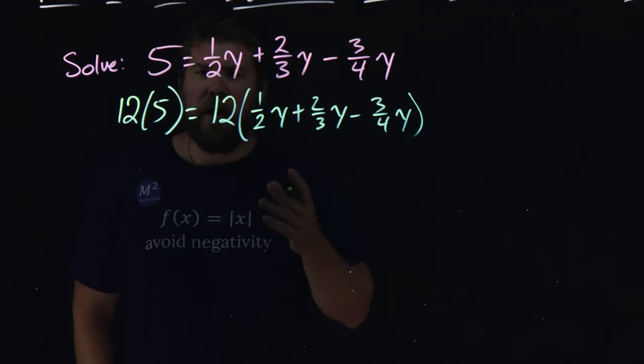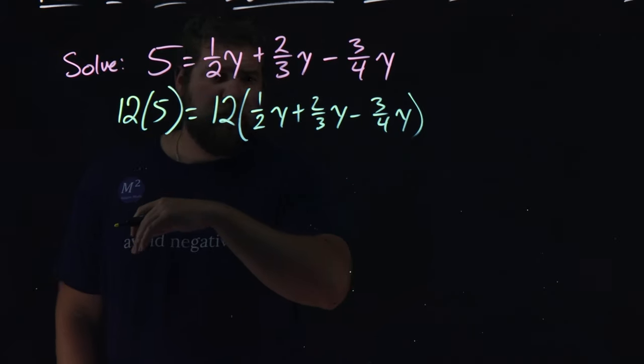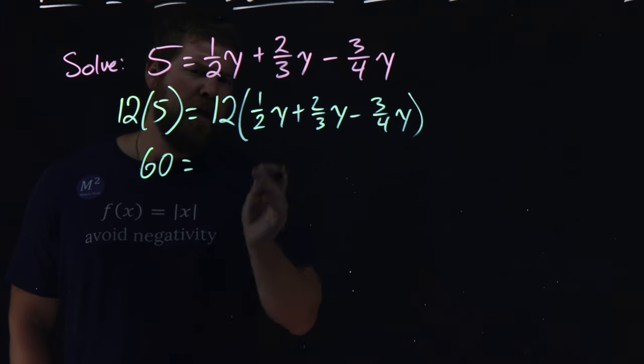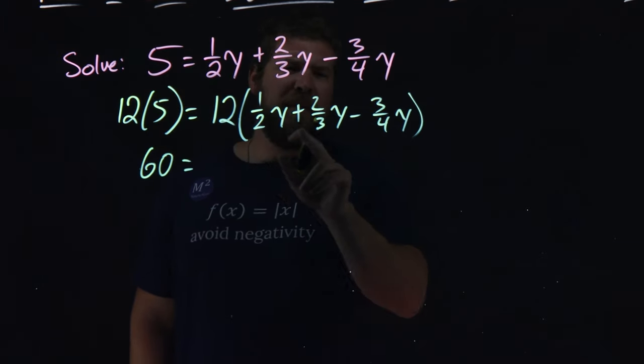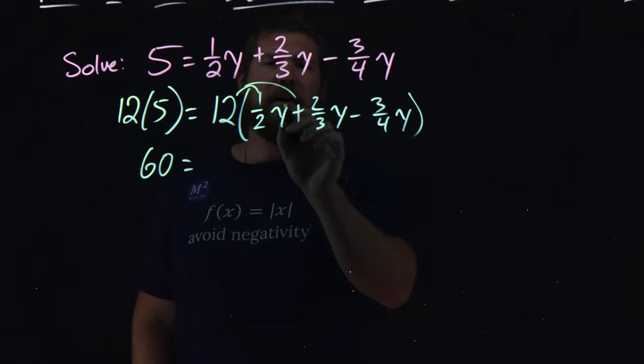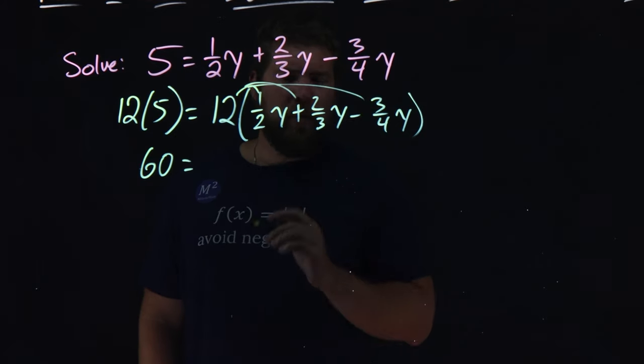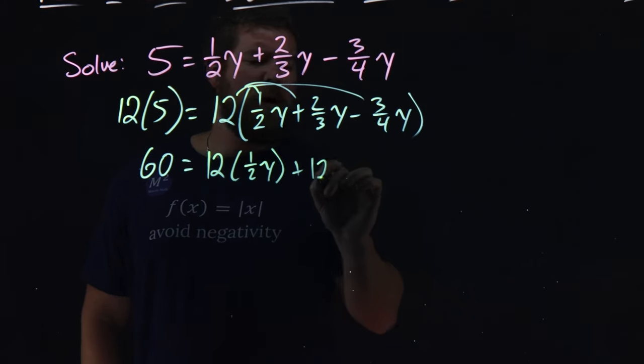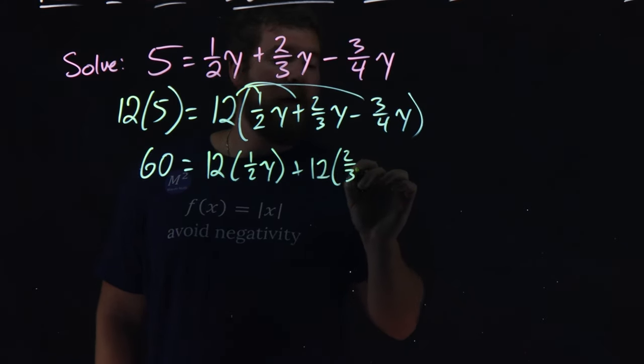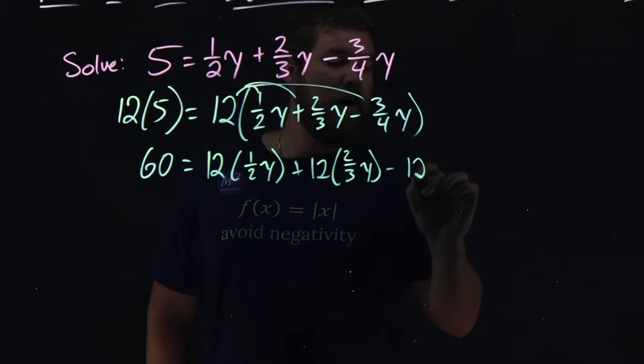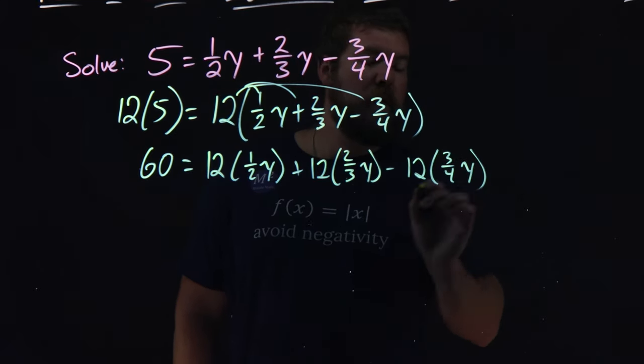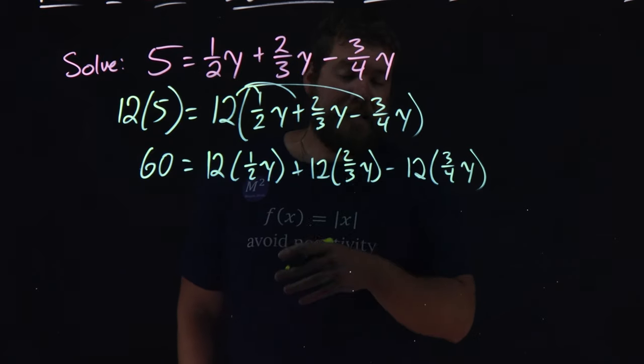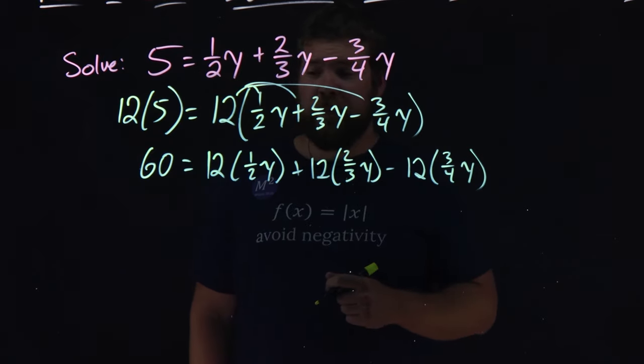Now, take your time with this. You don't need to rush. Let's simplify this now. 12 times 5 is 60. Now, we have to distribute 12 to each part here. Let's rewrite it: 12 times 1 half y plus 12 times 2 thirds y minus 12 times 3 fourths y. And this is where you'll see the least common denominator, or the LCD, comes in handy.